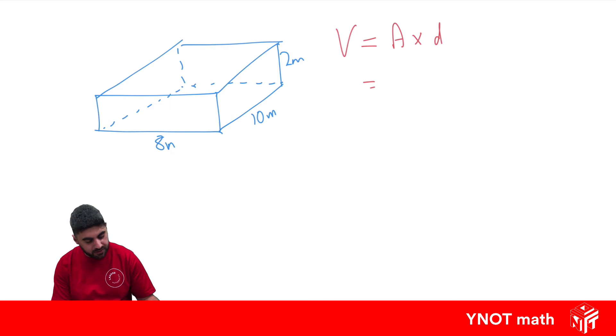8 times 2 is 16, times 10 is 160 meters cubed. And because we're doing volume in three dimensions, we need to make sure our units are cubed.